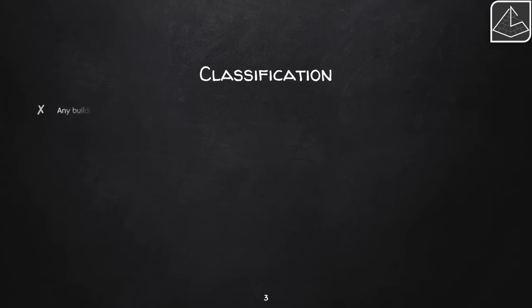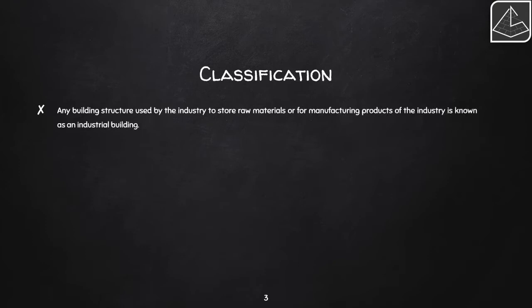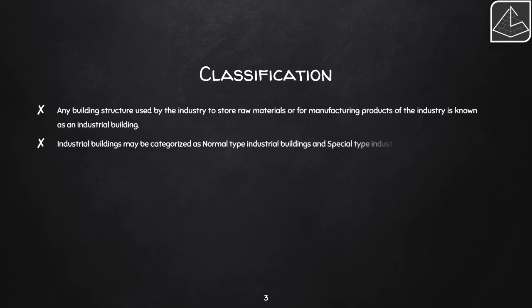Any building structure used by industry to store raw materials or for manufacturing products is known as an industrial building. Industrial buildings can either store raw materials or house lots of machinery to create different products — ranging from smallest equipment like mobile phones, computers, and laptops, to larger machinery such as cars and trucks.